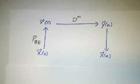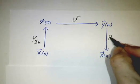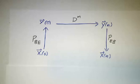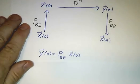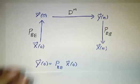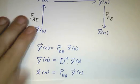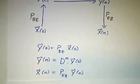So that's multiplying by d to the n. And then we wrote the down elevator, which is P e b. So y of 0 was P b e times x of 0. Y of n was d to the n times y of 0.